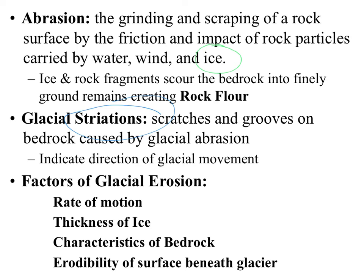There's usually a multiple choice question on this: glacial striations indicate the direction that the glacier moved. So if the glacier moved this way, in the bedrock you're going to see scratches in that direction. If any of you have ever been in Central Park, New York City, during the summer months you can actually go in and see the scratch marks in the bedrock — glacial striations.